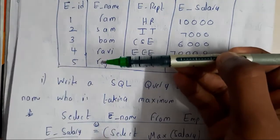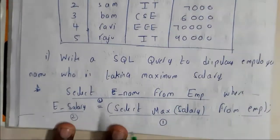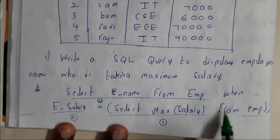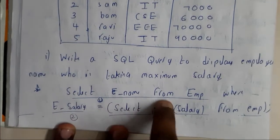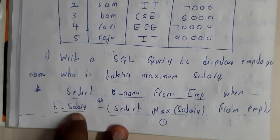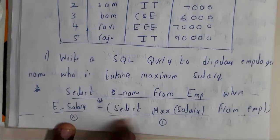First, understand the subquery: SELECT MAX(Salary) FROM Employee. Now we got the maximum salary from the employee. Now SELECT E_name FROM Emp WHERE E_Salary equals our maximum salary which we got. This will be the result of the maximum salary of the person.